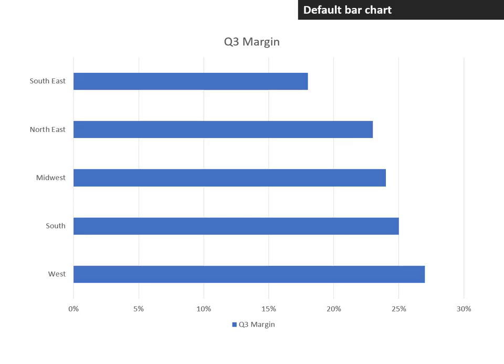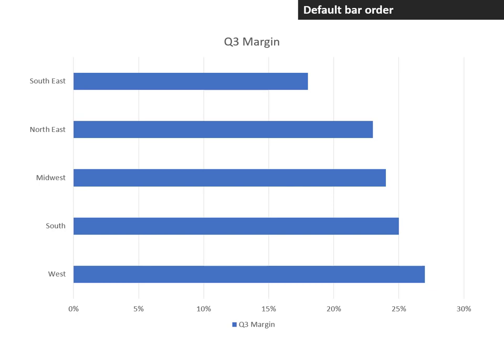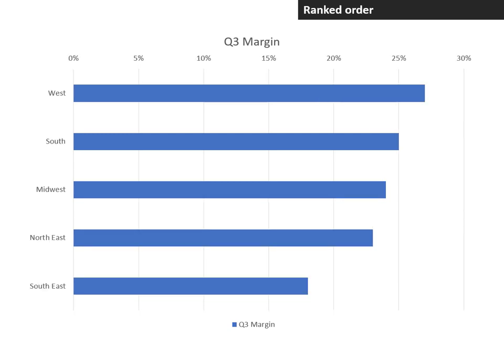We start with the default bar chart that you can create in Excel or PowerPoint. Step one is to arrange the bars in ranked order. By default, even though you've ranked the data in your table from largest value to smallest value, the default bar chart order is in what many people would think is reverse. So we need to rank it so that the top value is at the top of the chart. To do this, we simply use the 'categories in reverse order' setting for the vertical axis.